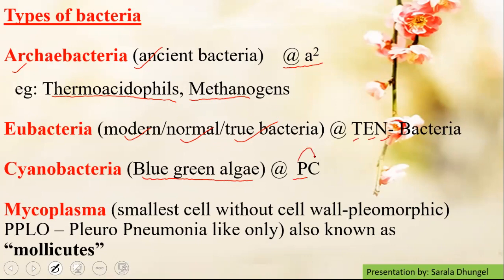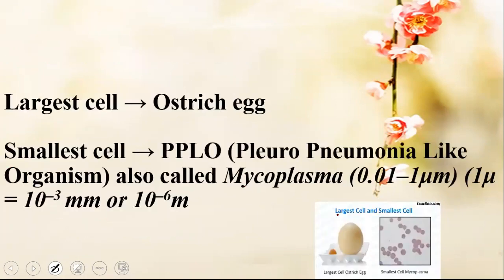Mycoplasma — they are the very smallest cells without a cell wall. As they do not have a cell wall, they are pleomorphic, meaning they can change their shape. This is one of the most frequently asked questions: what is the smallest cell without a cell wall? It is mycoplasma. It is also considered as PPLO — Pleuropneumonia-Like Organisms — as they were found in the pleural membrane. And as they are very minute, they are also considered as mollicutes. So what is the largest cell? It is the ostrich egg cell. And what is the smallest cell? That is PPLO, which stands for Pleuropneumonia-Like Organisms, also called mycoplasma.